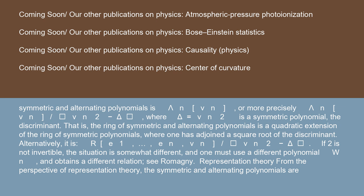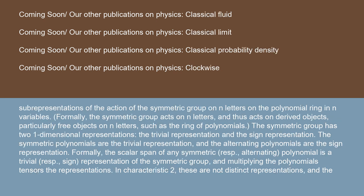From the perspective of representation theory, the symmetric and alternating polynomials are subrepresentations of the action of the symmetric group on n letters on the polynomial ring in n variables. Formally, the symmetric group acts on n letters and thus acts on derived objects, particularly free objects on n letters such as the ring of polynomials. The symmetric group has two one-dimensional representations: the trivial representation and the sign representation. The symmetric polynomials are the trivial representation and the alternating polynomials are the sign representation. The scalar span of any symmetric (resp. alternating) polynomial is a trivial (resp. sign) representation of the symmetric group, and multiplying the polynomials tensors the representations.